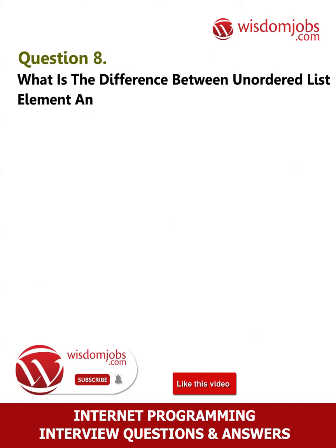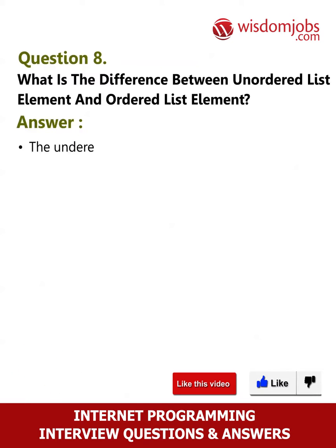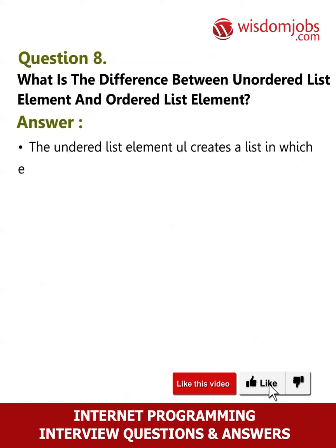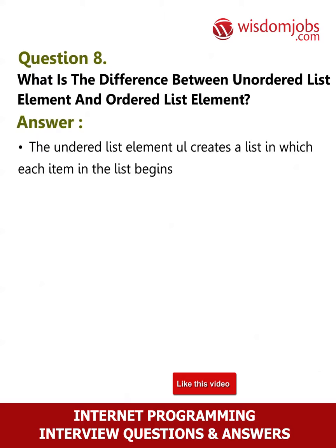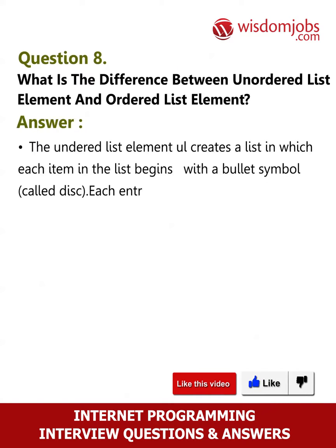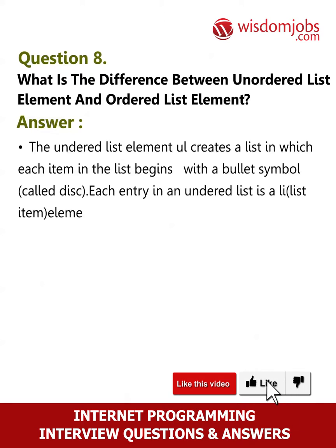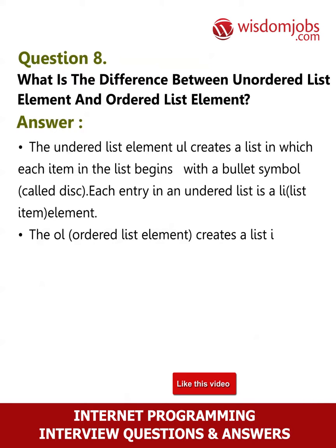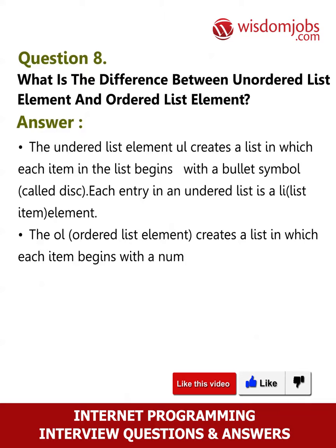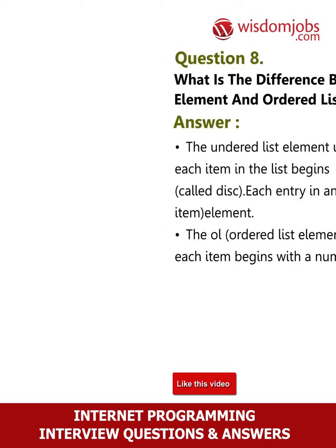Question 8: What is the difference between an ordered list element and an unordered list element? Answer: The unordered list element creates a list in which each item begins with a bullet symbol called a disc. Each entry in an unordered list uses a list item element. The ordered list element creates a list in which each item begins with a number.